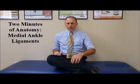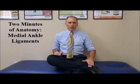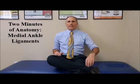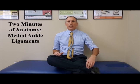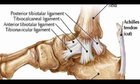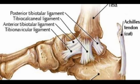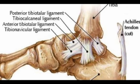The tibia is the large bone on the medial aspect of the lower leg. This big bump right here is called the medial malleolus. There are four ligaments that attach the tibia to the foot, and they connect to three different bones. So there are four ligaments on the medial aspect of the ankle but they connect to three bones.